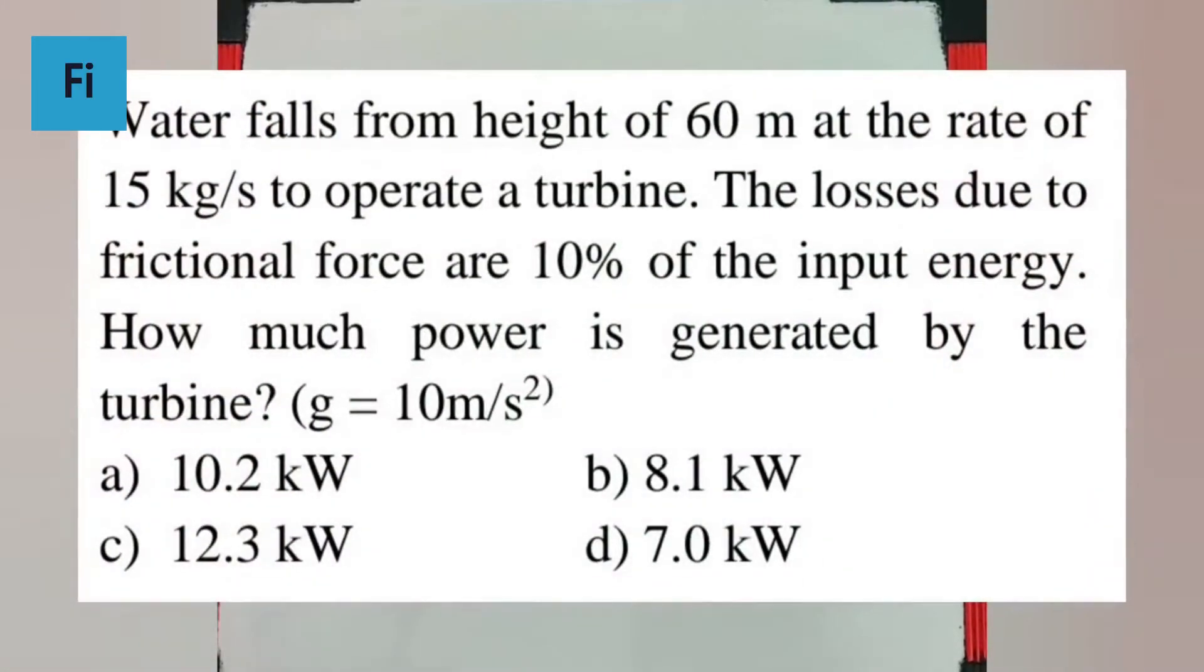The question says water falls from height of 60 meter at the rate of 15 kilogram per second to operate a turbine. The losses due to frictional force are 10% of the input energy. How much power is generated by the turbine?